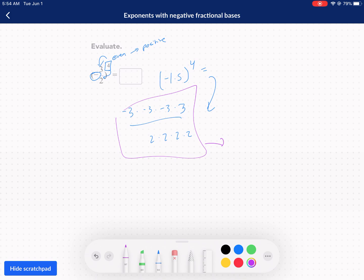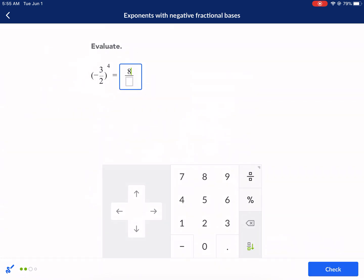Let's see. Negative 3 times 3 is negative 27. We're going to times it by 3 again. We're going to get 81. And then 2 times 2 times 2 is 8. Times 2 is 16. So 81 over 16 is going to be our answer. 81 over 16.